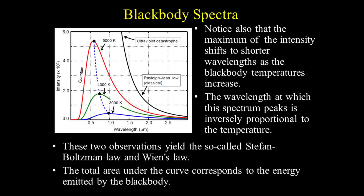Notice also that the maximum of the intensity shifts to shorter wavelengths as the blackbody temperature increases. The wavelength at which the spectrum peaks is inversely proportional to the temperature. These two observations yield the so-called Stefan-Boltzmann law and Wien's law.